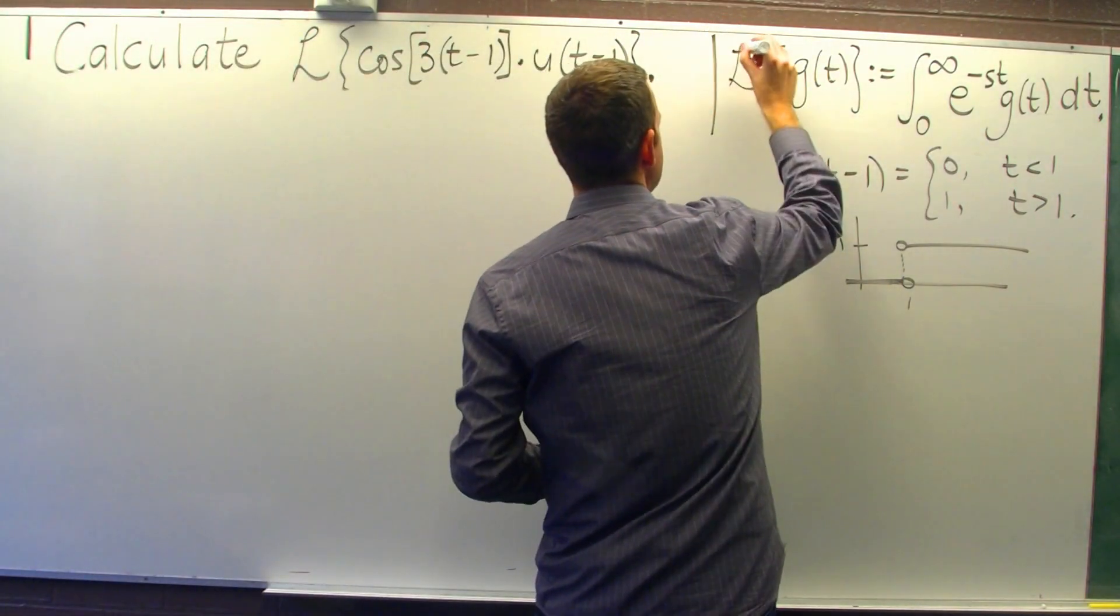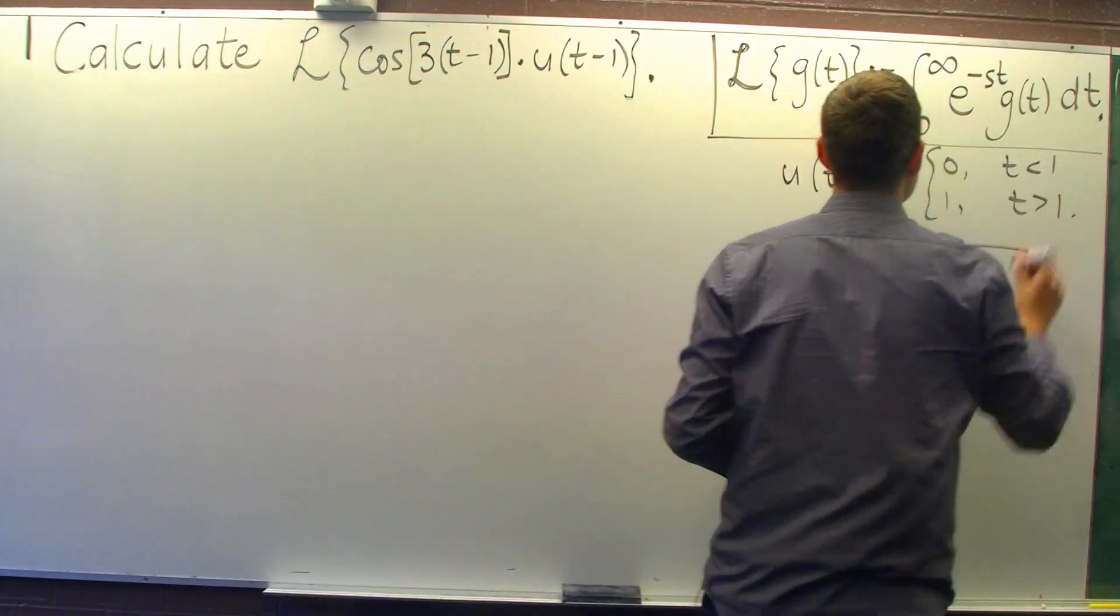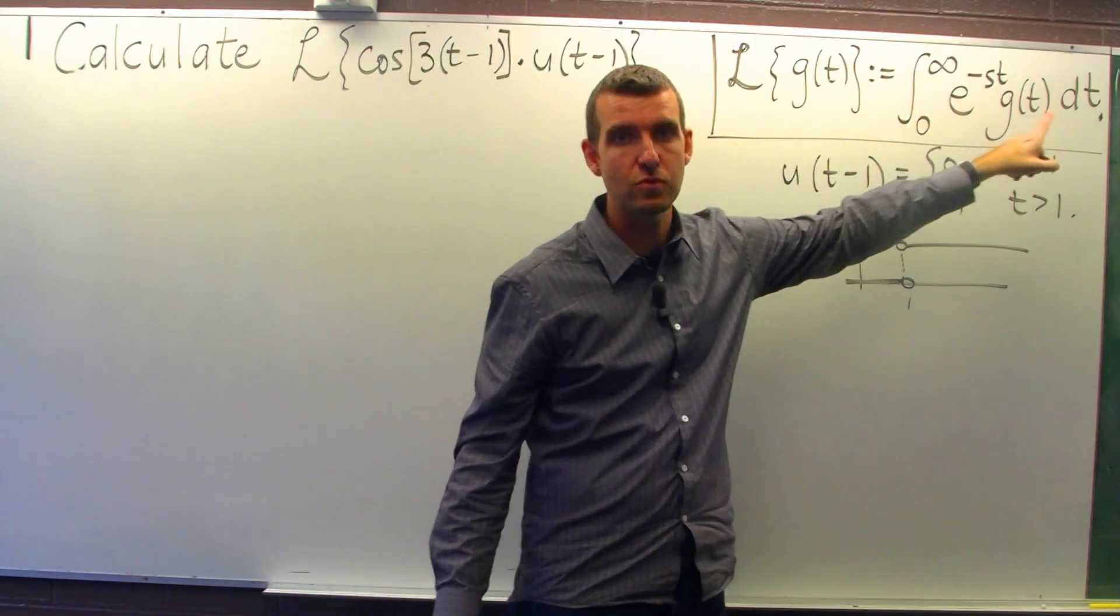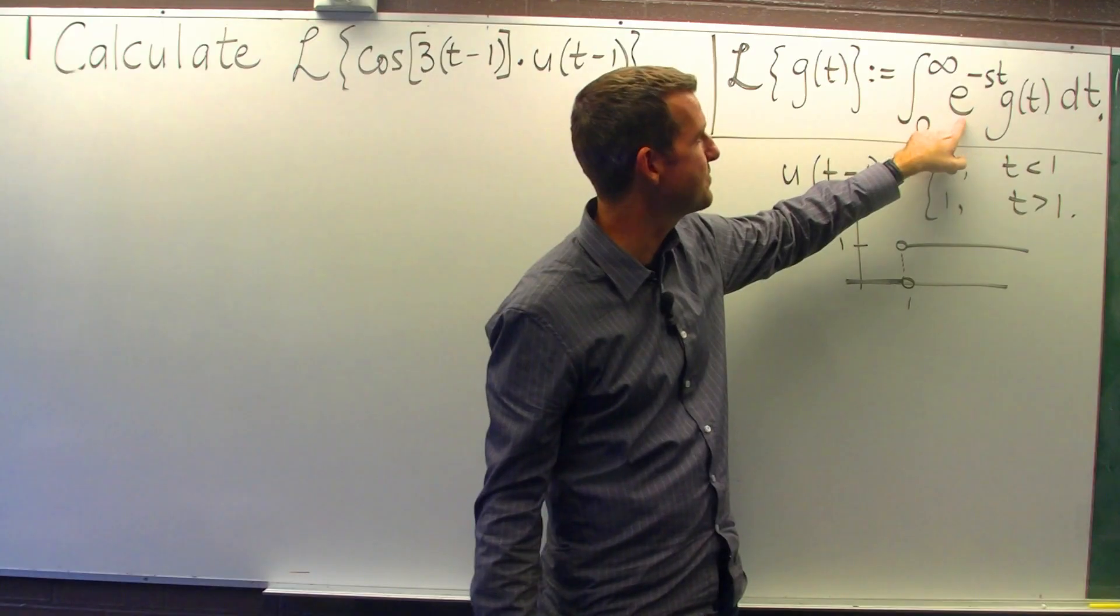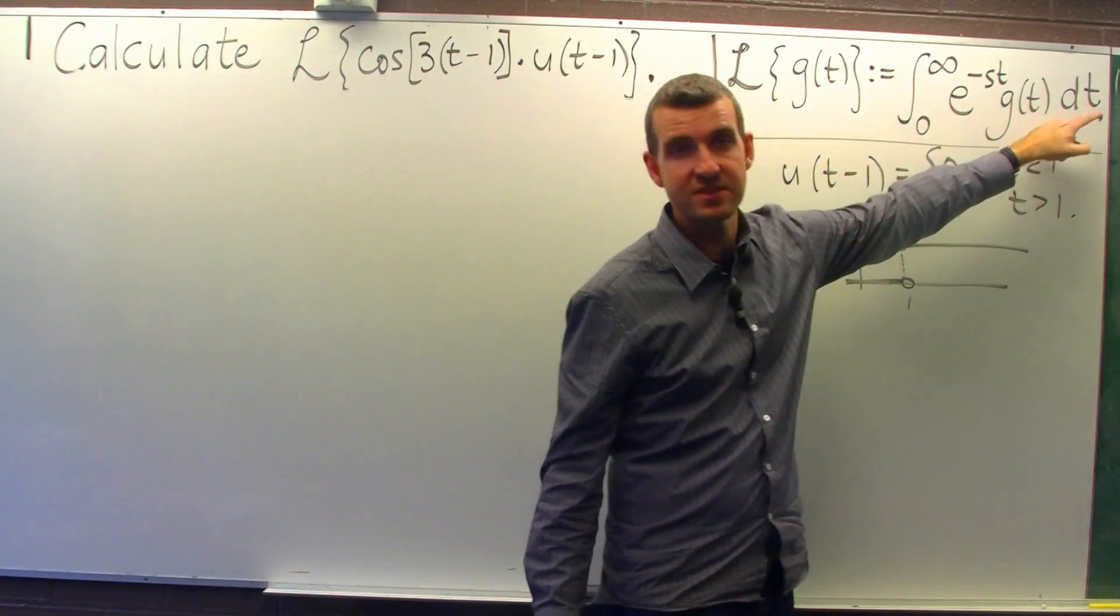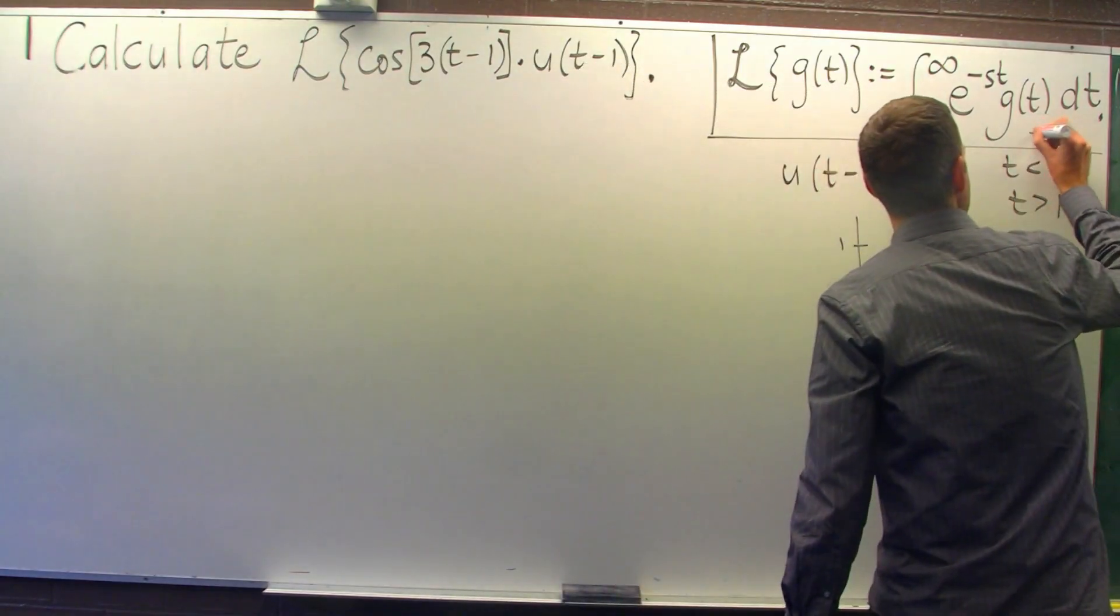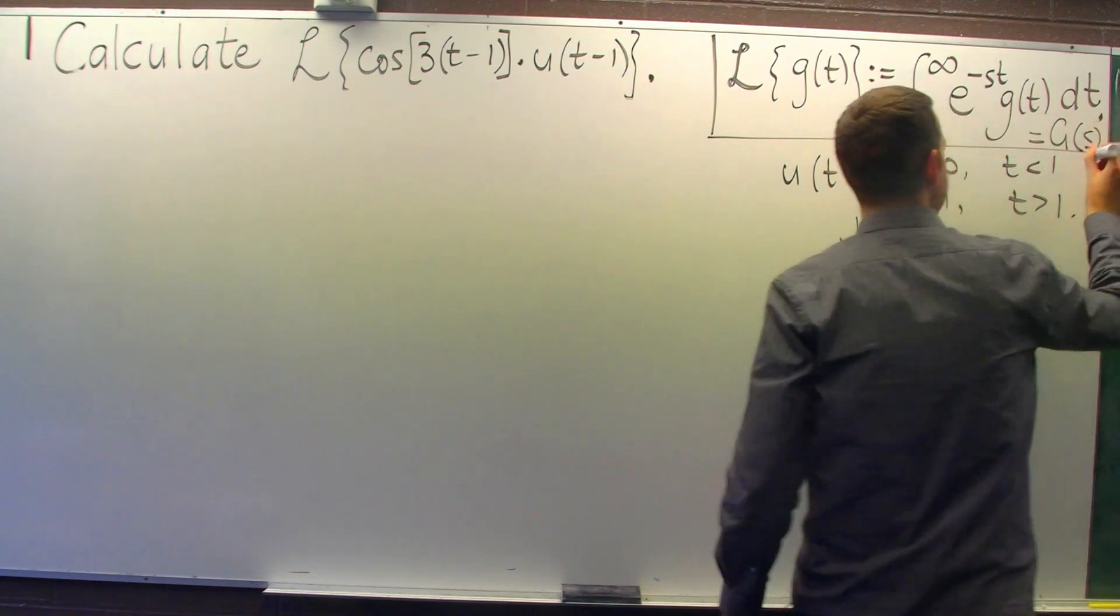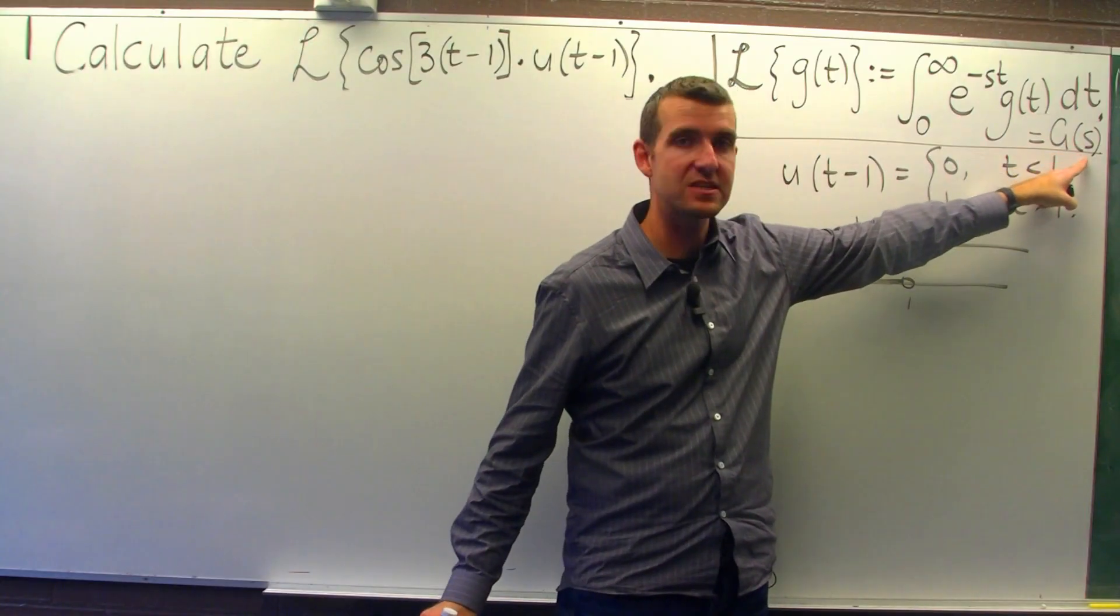Well, the Laplace transform of a function of t is just this integral here. Notice we take the function of t, multiply it by this exponential function and integrate it with respect to t over this half line. Now because t is the dummy variable and there's s up here, the whole thing is actually a function of s.